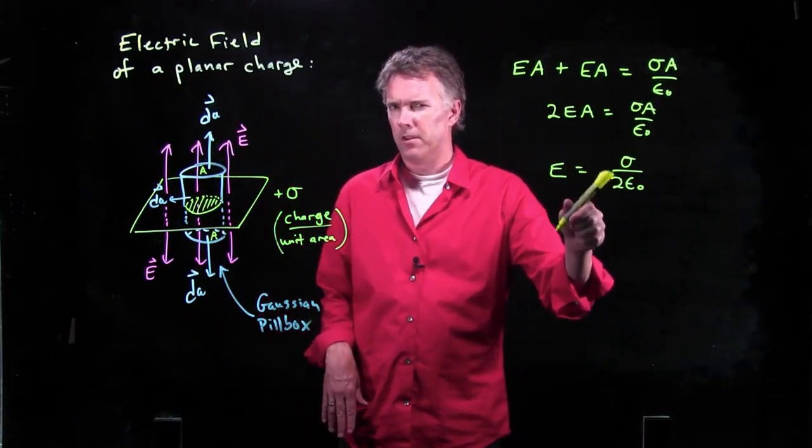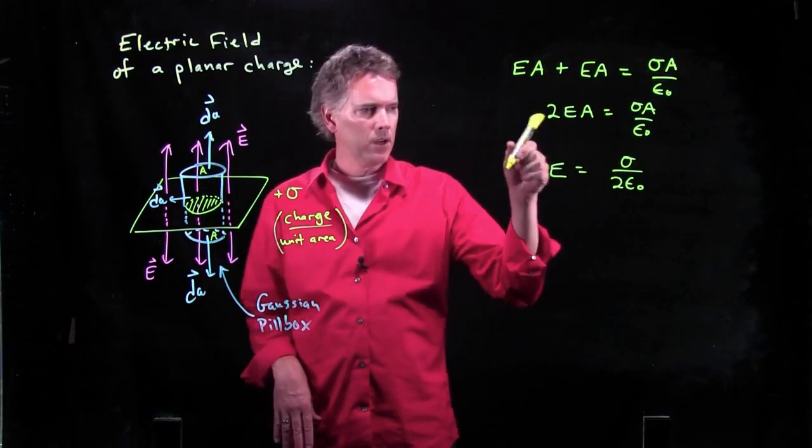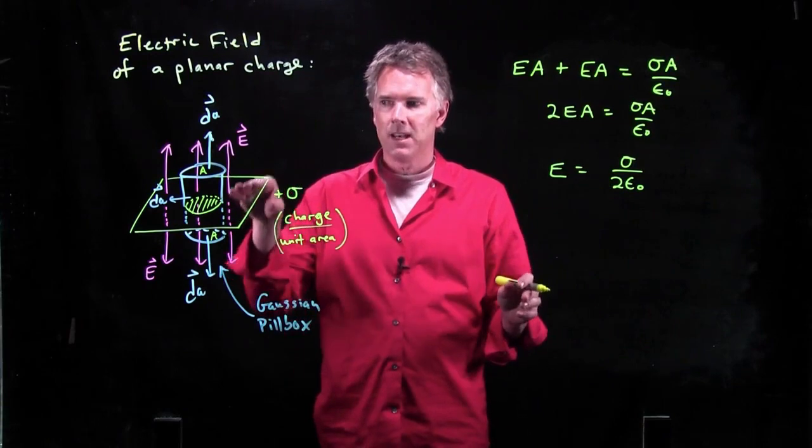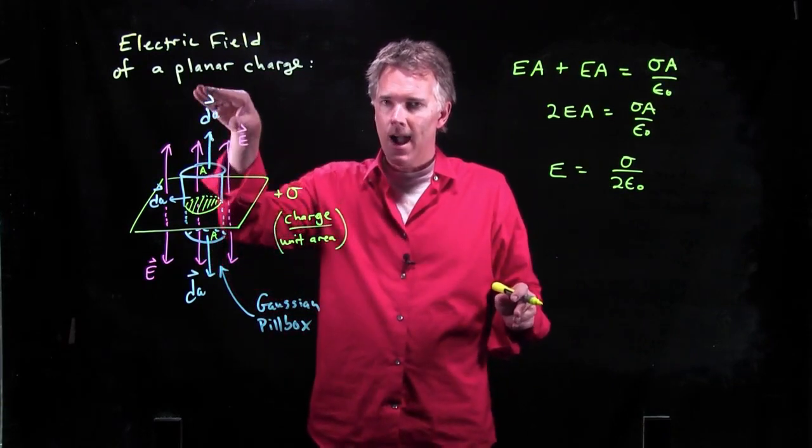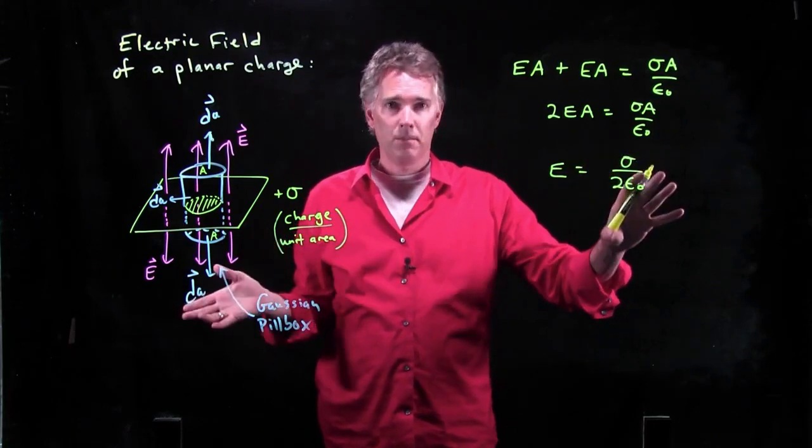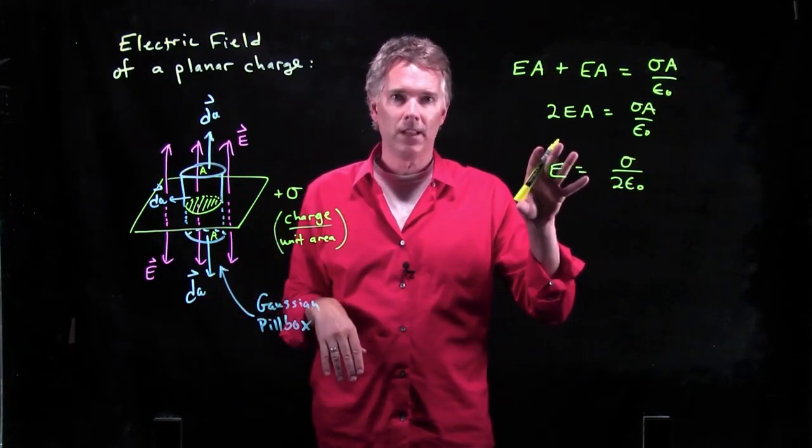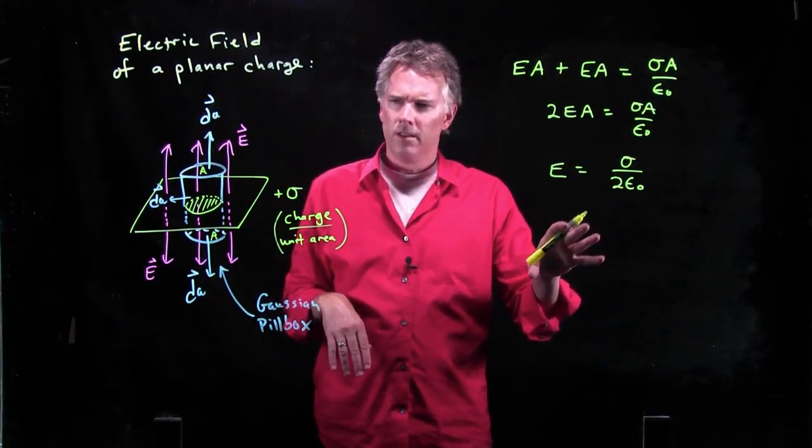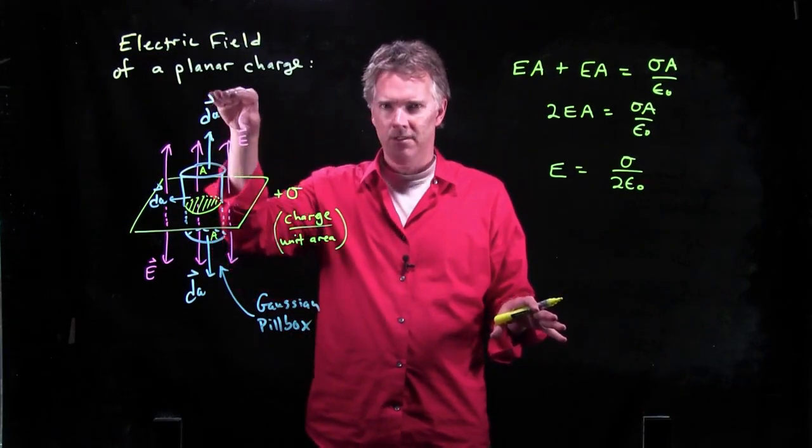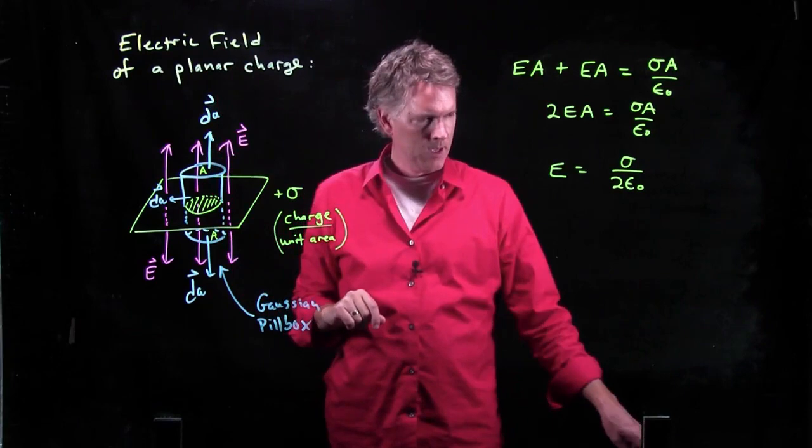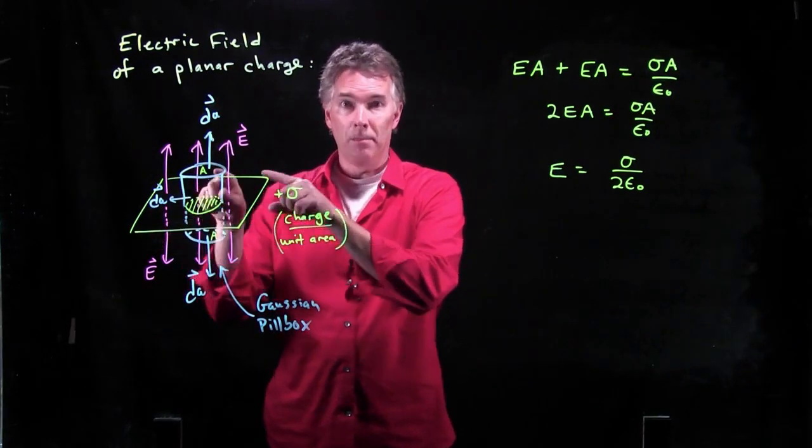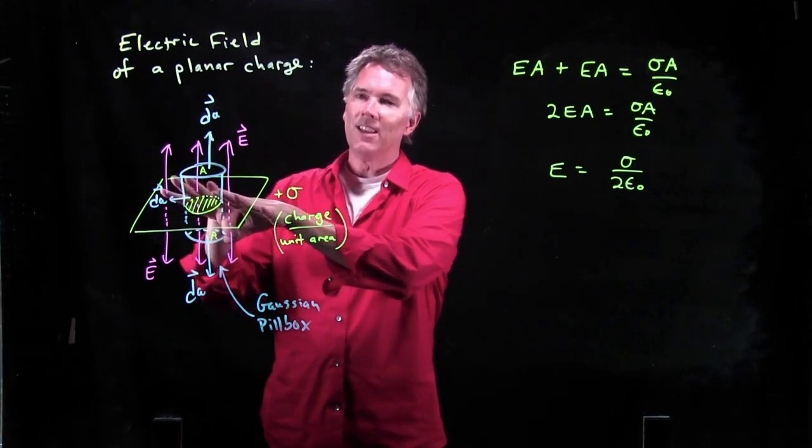Now, this is very interesting, right? Why is it interesting? Because it says the magnitude of the electric field does not depend on how high you go. It's a constant. It's just a number. Sigma is a number. Epsilon naught is a number. Does that seem right? Should the electric field really just be a constant as you go up?